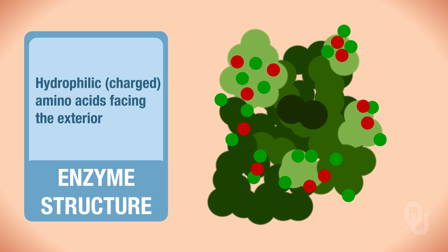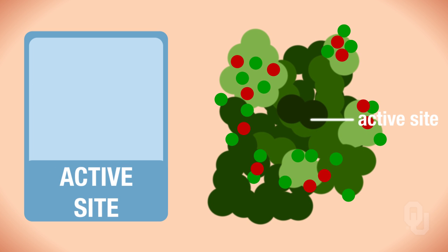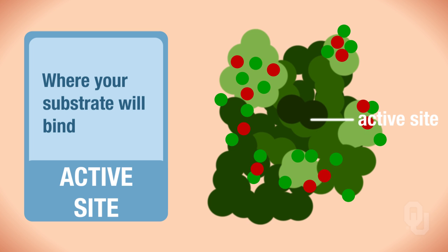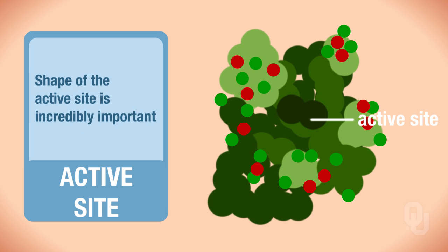So the folding of the protein and the distribution of charges is going to determine what reactants can bind, how tightly the reactants bind, and the speed at which the reaction proceeds. And so here on this image, you're looking at the active site. The active site on the enzyme is where your substrate will bind. So the shape of the active site is incredibly important.